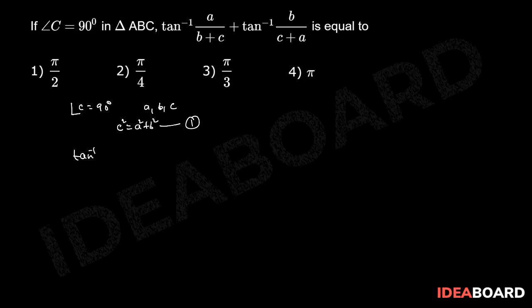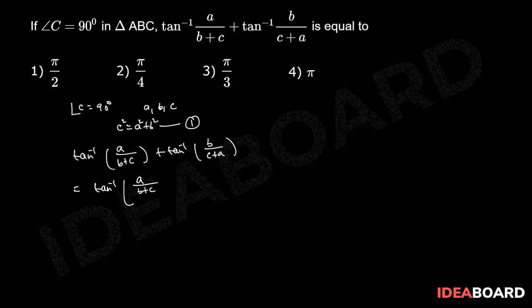Now, tan inverse A/(B+C) plus tan inverse B/(C+A) is in the form of tan inverse X plus tan inverse Y. That means we apply the formula: tan inverse (X + Y)/(1 - XY). Therefore, we have tan inverse of [A/(B+C) + B/(C+A)] divided by [1 - A/(B+C) × B/(C+A)].